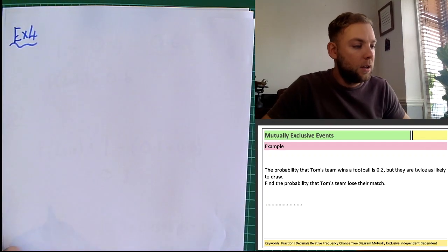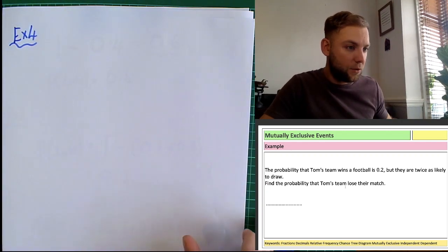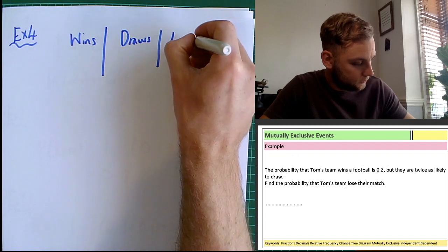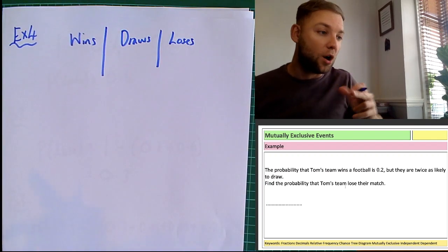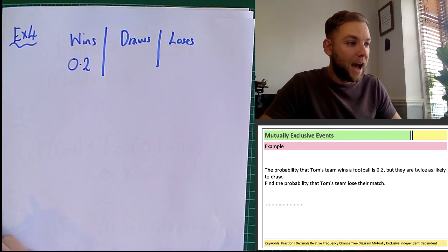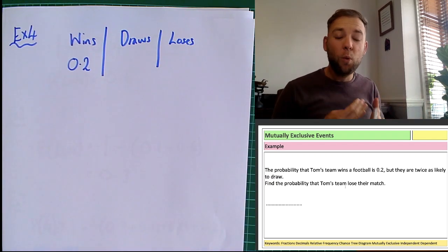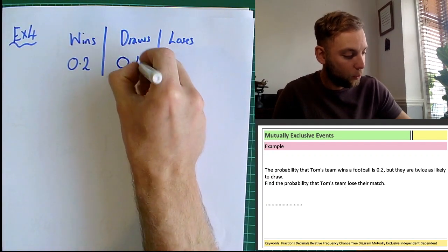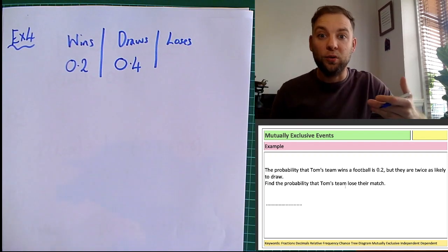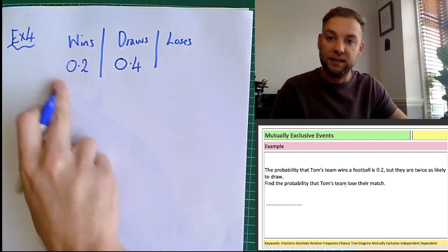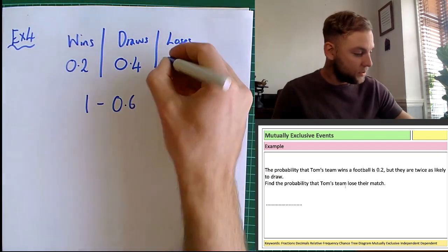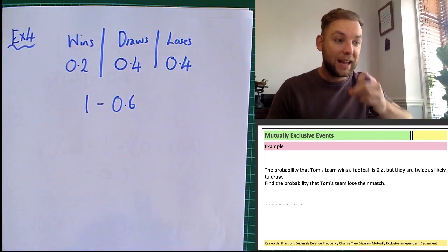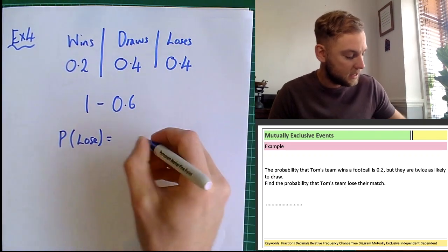The options Tom has are that he wins, draws, or loses. We know the probability of winning is 0.2. It says they are twice as likely to draw, so the probability of drawing is equal to 0.4. Then the probability of losing is one take away both of these: one minus 0.6, which equals 0.4. Let's make it clear to the examiner: the probability that he loses is equal to 0.4. We can check — do these sum to one? Yes, they do.